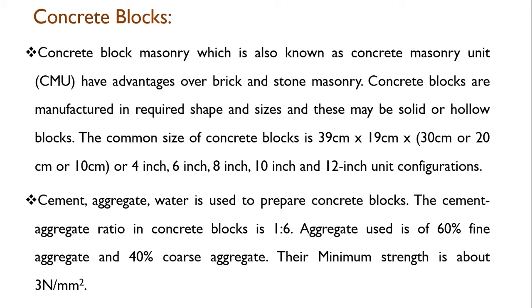The common sizes in which concrete blocks are manufactured are 39 by 19 cm. The length is 39 cm and the width is 19 cm. Thickness is produced depending upon the wall thickness — maximum is 30 cm, then 20 cm and 10 cm, or in inches: 4 inch, 6 inch, 8 inch, 10 inch, and 12 inch configurations.